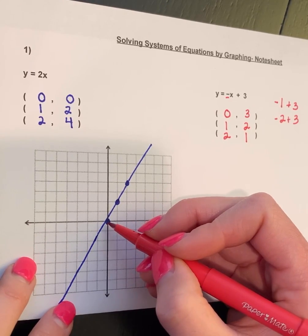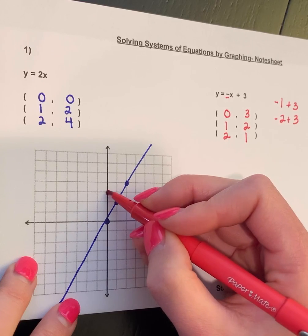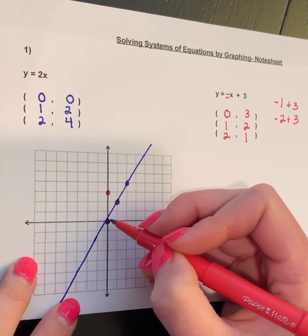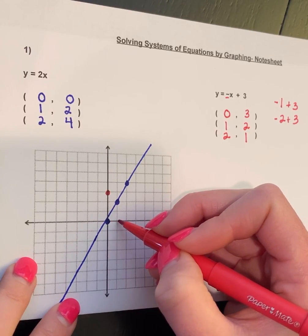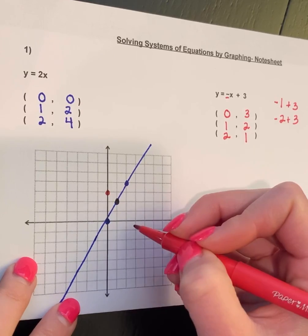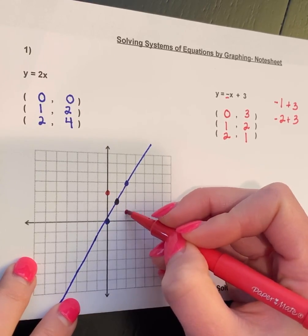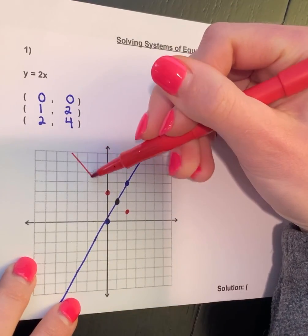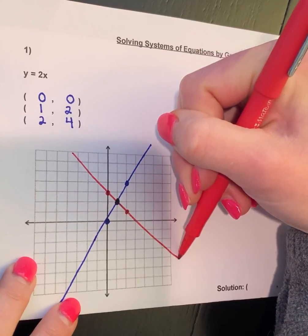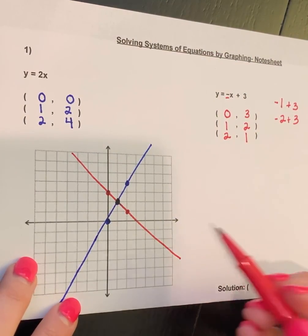Then we plot our points. I'm going to do (0, 3), so I go up to (0, 3), and I do over 1 up 2, and I do over 2 up 1, and I connect those points.